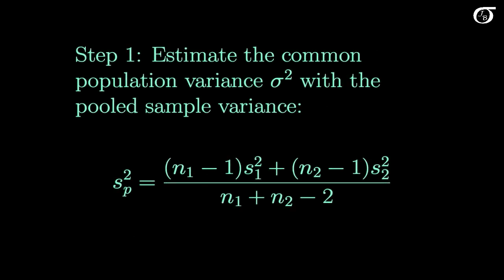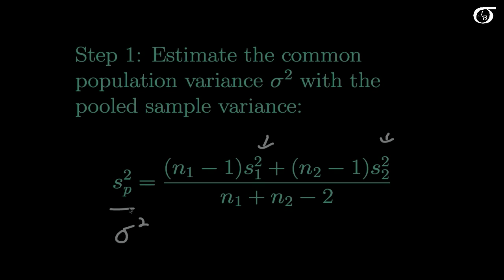What we're going to do first is estimate the common variance sigma squared with the pooled sample variance, sp squared. Our pooled sample variance is a weighted average of the two sample variances, weighted by their individual degrees of freedom. Sp squared estimates sigma squared.